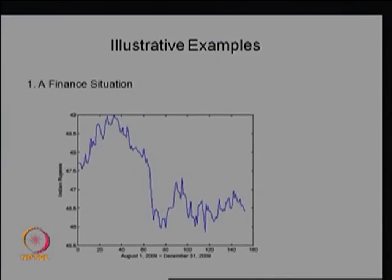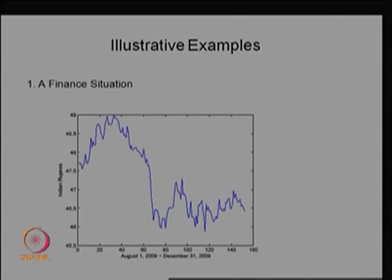Let us see the first example from a finance situation. This is actual data captured over the period from August 1, 2009 to December 31, 2009, showing the current price of 1 US dollar in Indian rupees. On August 1, 2009, the price of 1 US dollar was 47 rupees 57 or 58 paise. Over the days, the price keeps changing, going higher and then down, fluctuating and so on.